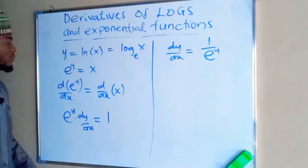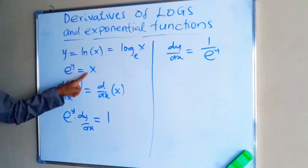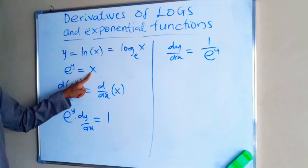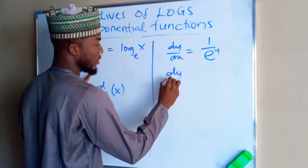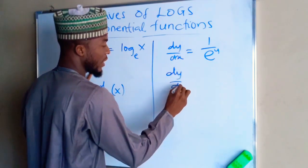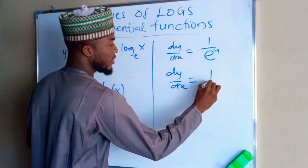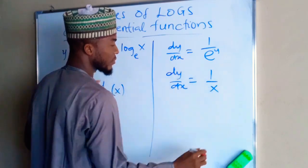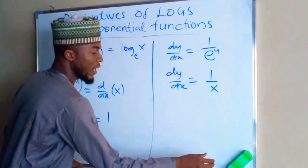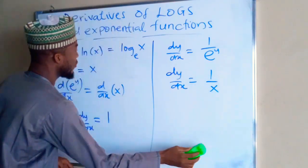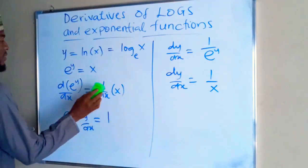But exponential y is equal to x from here. Finally, dy over dx will be equal to 1 divided by x. I have another method for solving this.